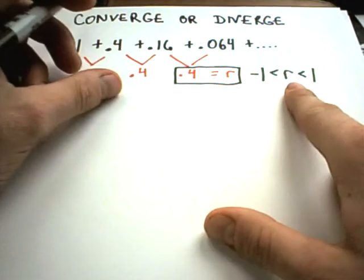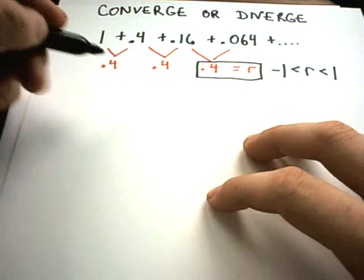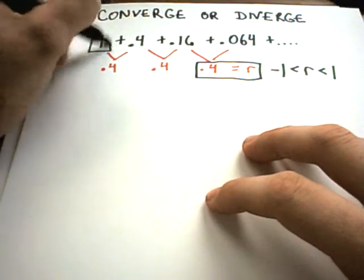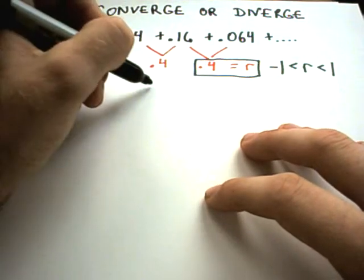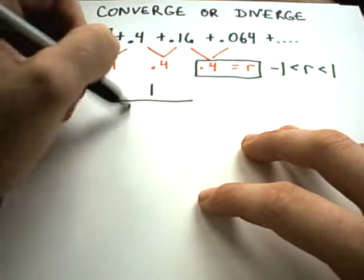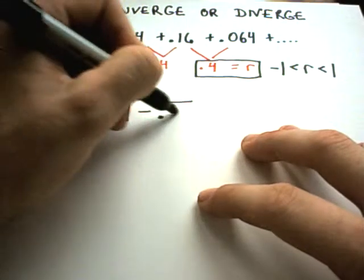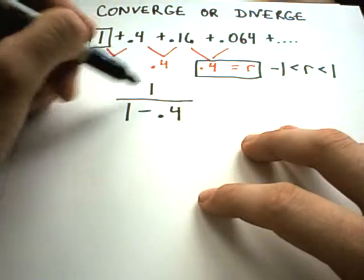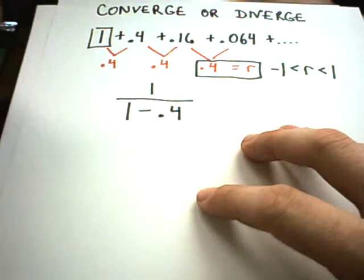And it's going to converge to the first term - well, here's the first term that gets spit out - 1 over 1 minus 0.4. Remember you take the first term over always 1 minus the common ratio.